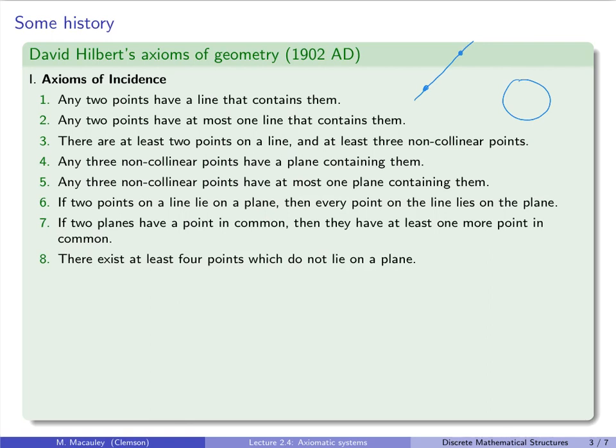The next one says any two points have at most one line that contains them. This is not necessarily for every geometry. This is specifically for Euclidean geometry. Because if you can imagine, you can have spherical geometry. And if you have two antipodal points, like the North Pole and the South Pole, then there are actually a lot of lines that contain those two points.